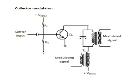As a result, across the tank circuit we get a sinusoidal radio frequency voltage at carrier frequency, whose peak amplitude changes in accordance with the modulating signal — that means the baseband signal. Thus, an AM wave is generated.